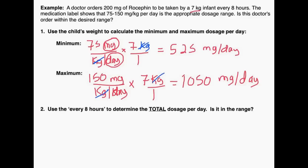If you look at this and say 'I'm giving 200, and 200 is well below the minimum, so that should be okay' — you've got to be careful. The 200 milligrams is not the number of milligrams per day; it's the number of milligrams per dose. How many times are you giving that 200 milligrams? The order says every 8 hours. You can't compare the range with the order because they are different units — the range is milligrams per day, the order is milligrams per dose.